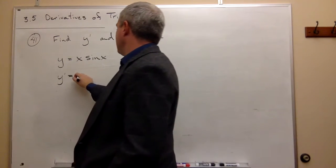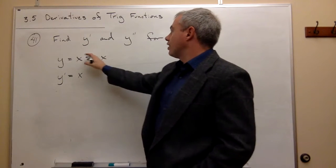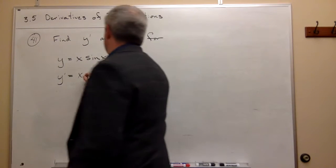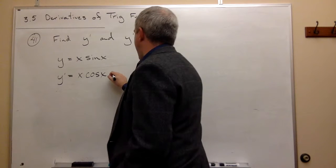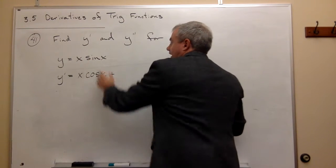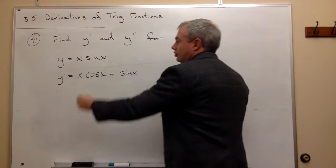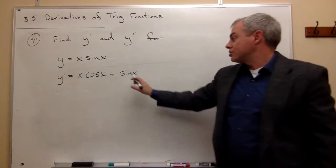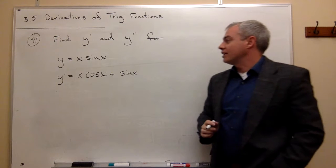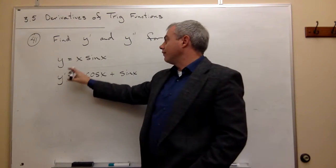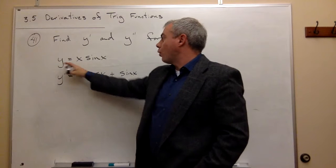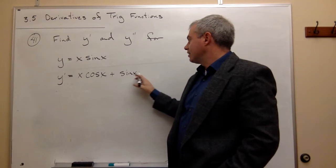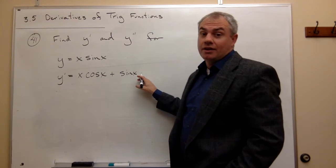I take the first one and leave it alone — x — times the derivative of the second function. The derivative of sine of x is cosine of x. Then I add the second one left alone — sine of x — times the derivative of the first function. The derivative of x is just one, so it's sine of x times one, which is just sine of x. So the first derivative of y equals x sine of x is x cosine x plus sine x.